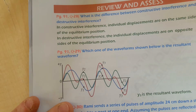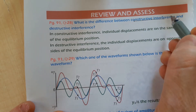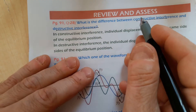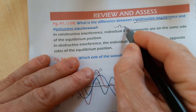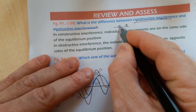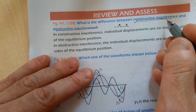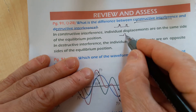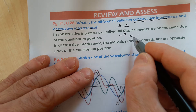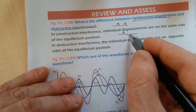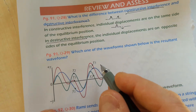Question number twenty-eight: what is the difference between constructive and destructive interference? In constructive interference, waves propagate or vibrate in the same direction with displacement in the same direction, reinforcing each other. In destructive interference, one wave vibrates in the positive direction while the other vibrates in the negative direction, so they cancel or weaken each other.